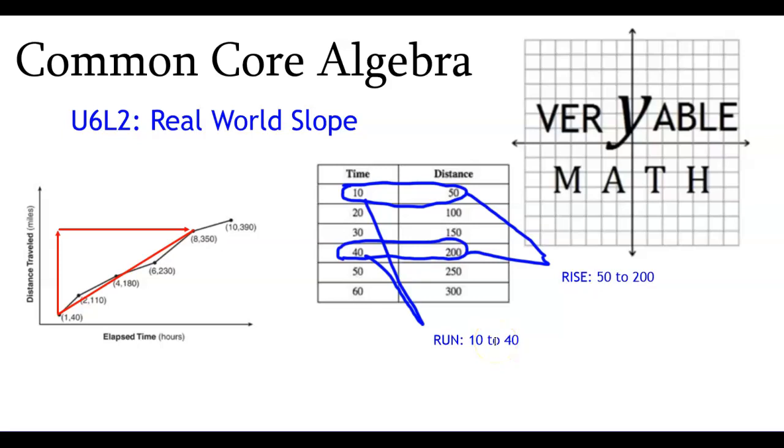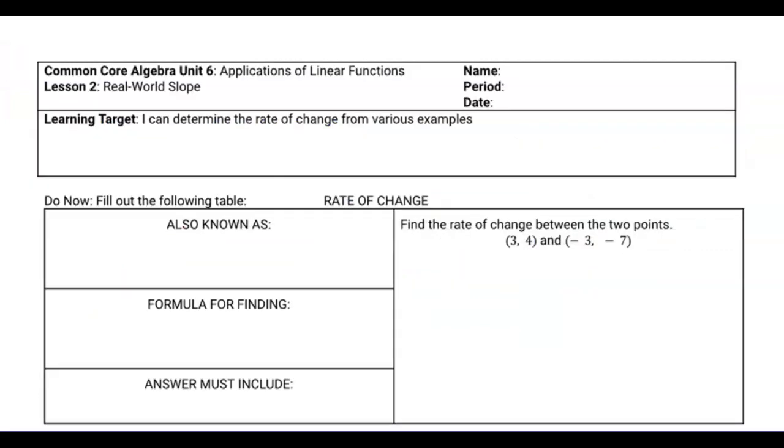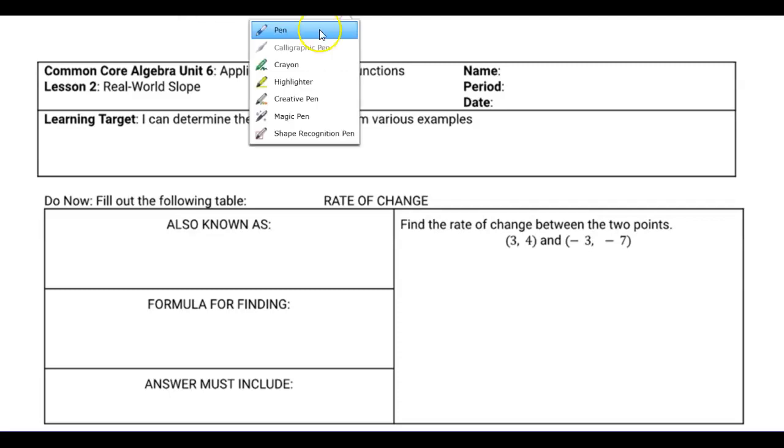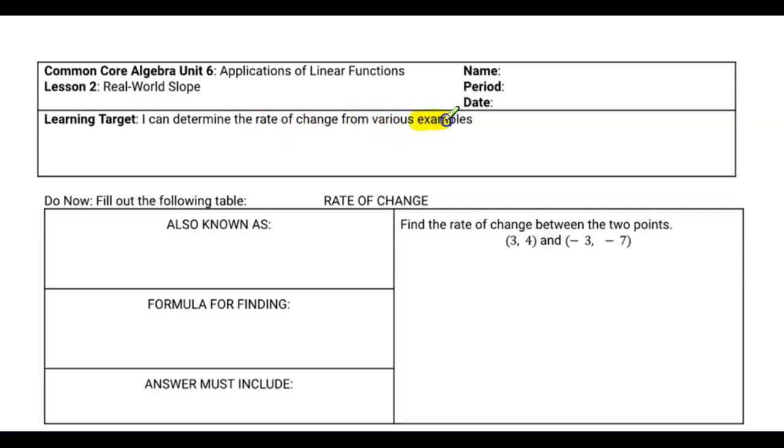In both cases, we're going to be trying to find the slope, which, as you know, is the rate of change or the rise over run between two points in a linear function. And you're going to have to look at these situations, a graph and a table, and identify what the slope is for those situations. Taking a look at the learning target, we're going to be determining the rate of change from various examples. Of course, you're looking at examples such as graphs and tables. And also keep in mind that the rate of change is otherwise known as the slope.